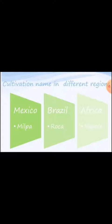It is good to know that cultivation is called 'milpa' in Mexico, 'roca' in Brazil, and 'masoli' in Africa. In India it is called 'Kheti' in Hindi.